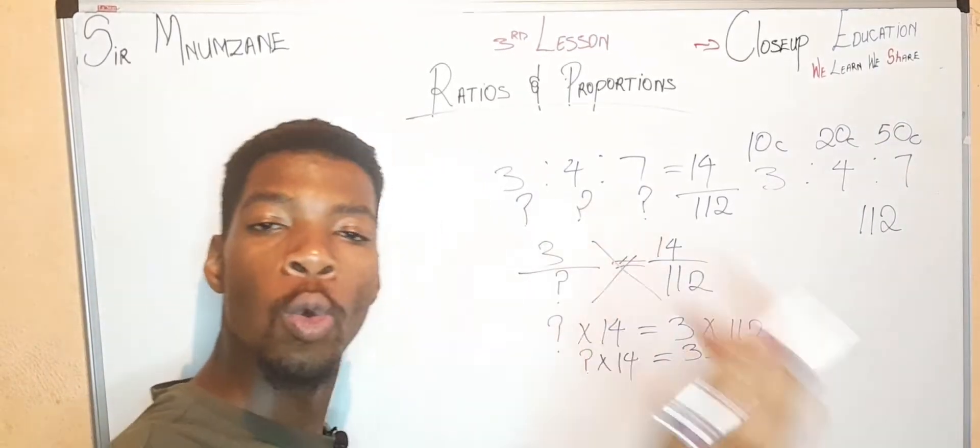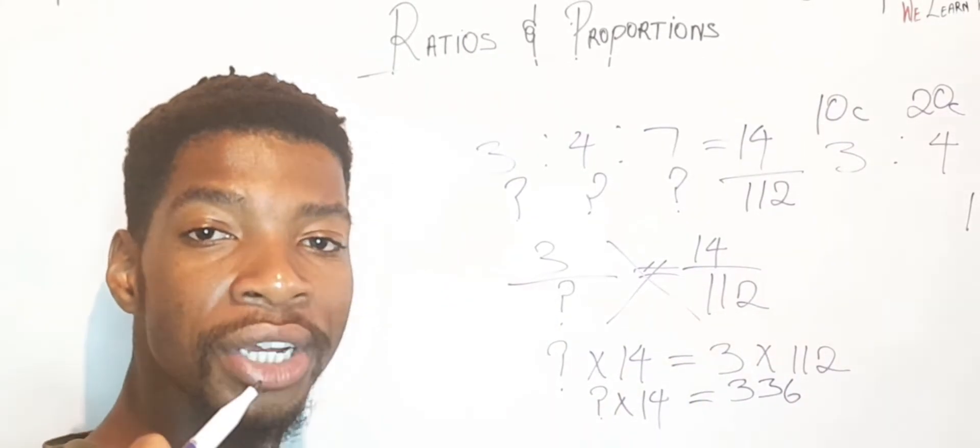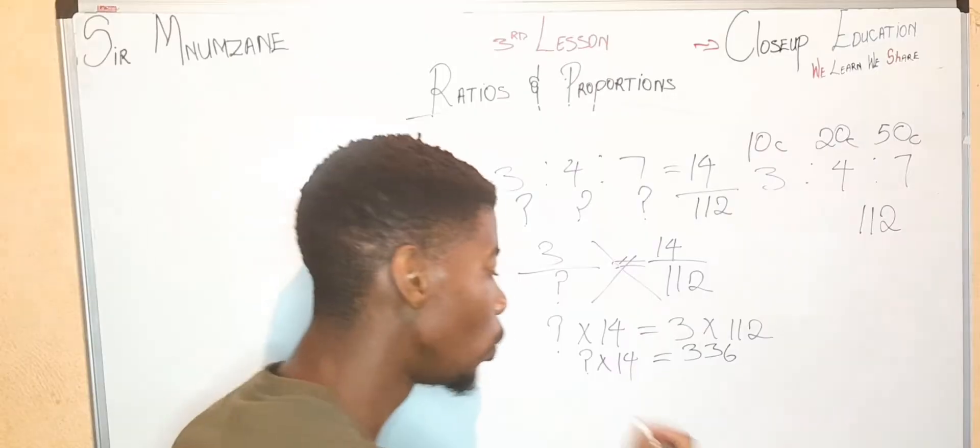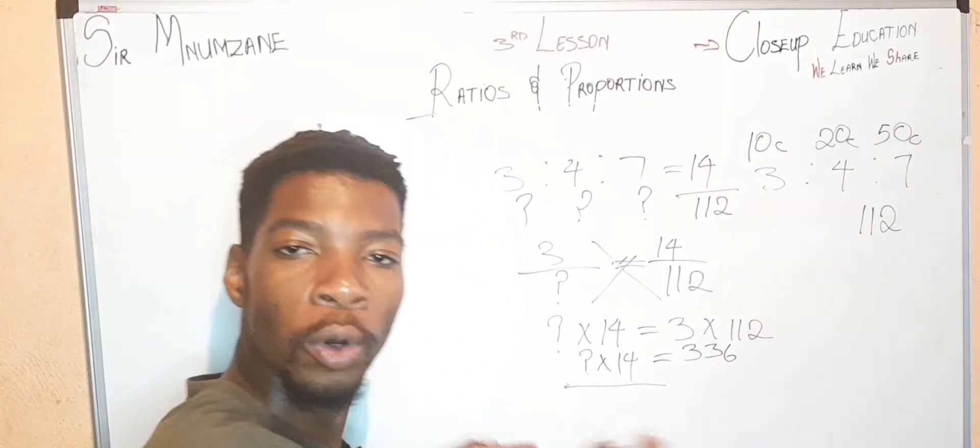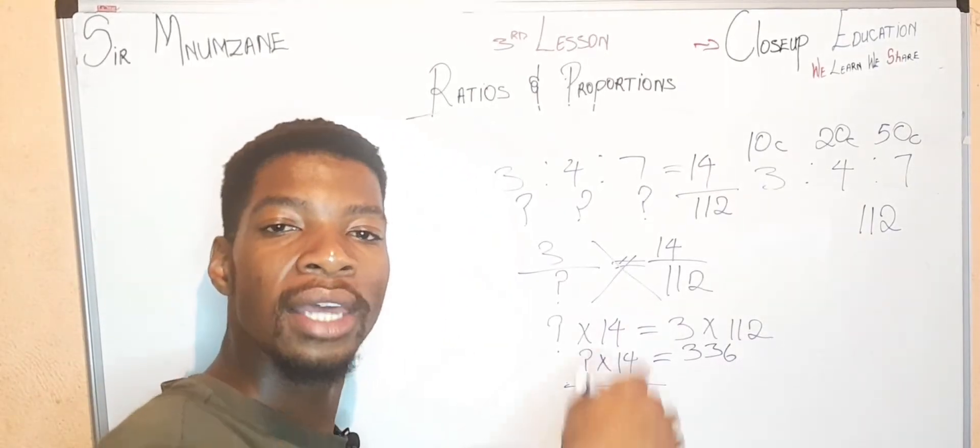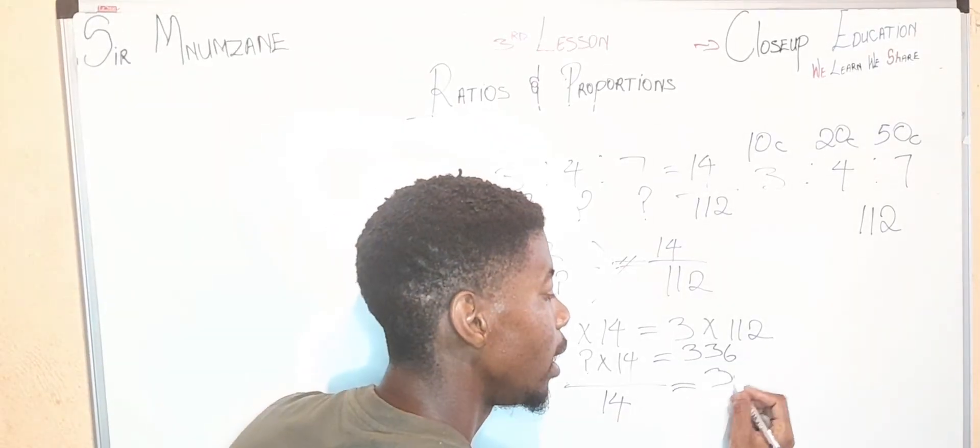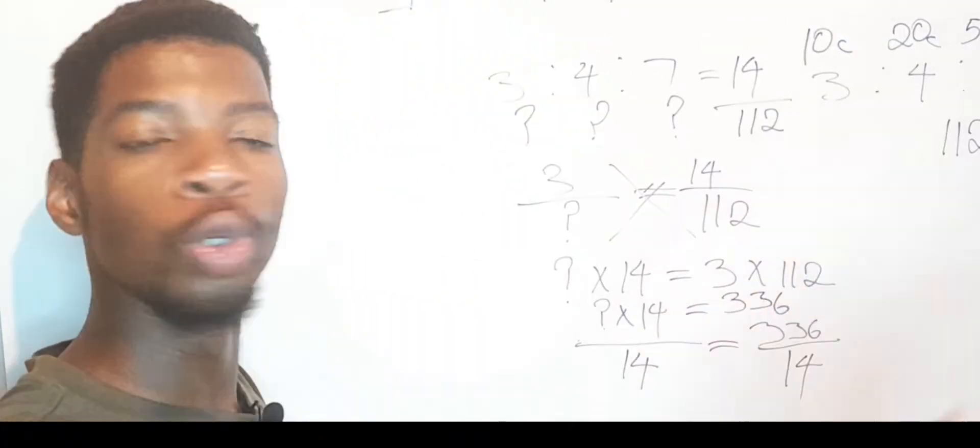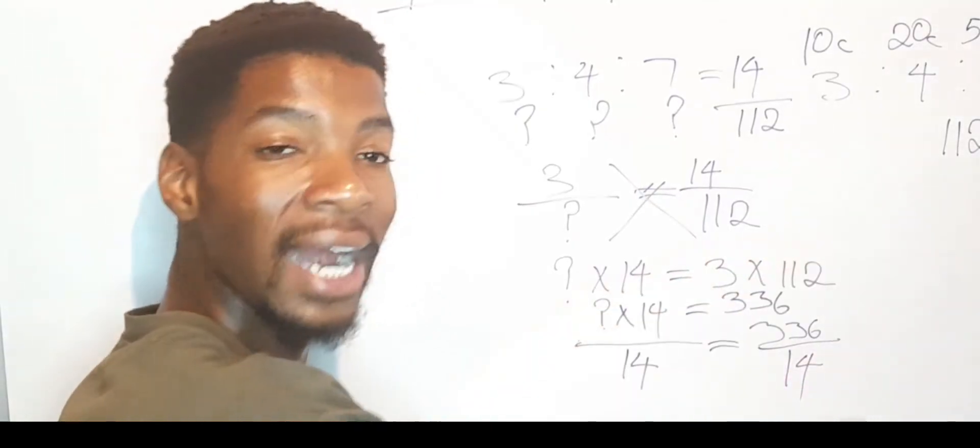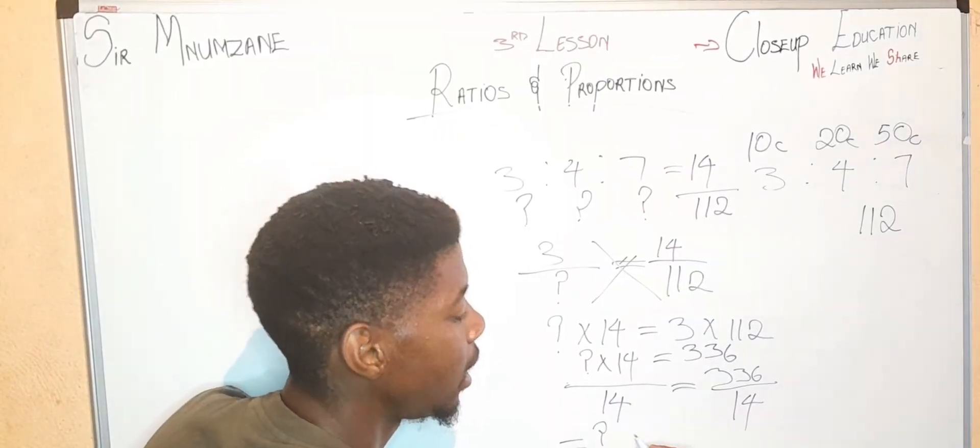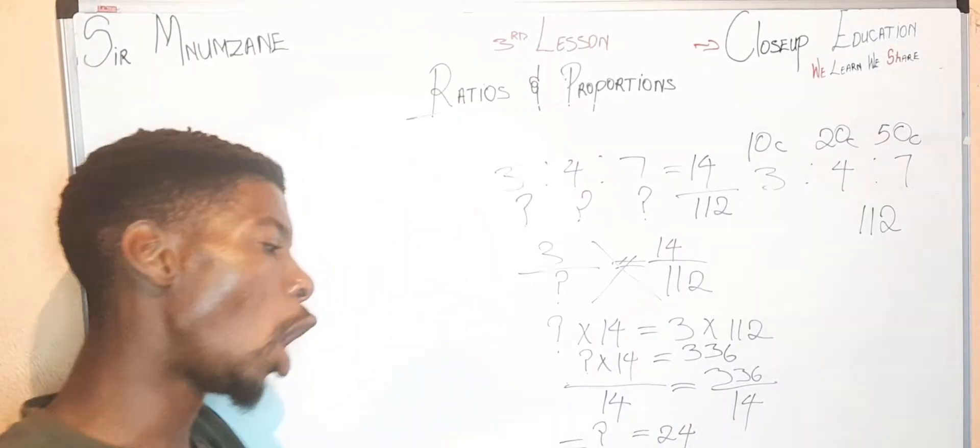We still have this problem. We divide by 14. They cancel each other. 14 equals 336 divided by 14. What you do on the left you also do on the right. What do we have? We have the unknown equals 24. So there are 24 ten-cent coins.